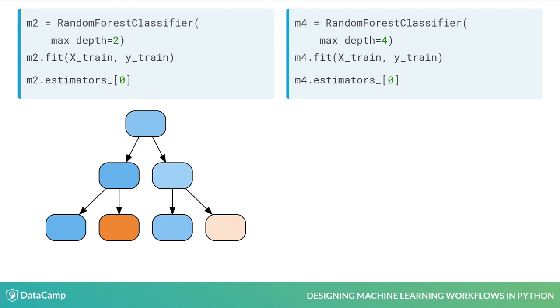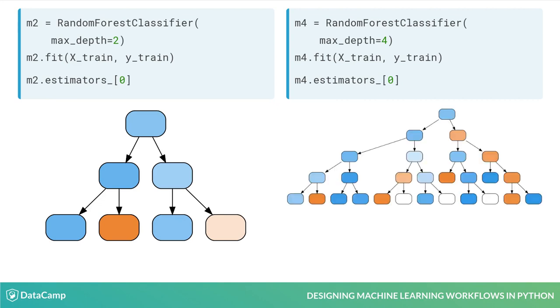Trees of depth 2 contain at most two nested decision rules, whereas depth 4 produces much deeper rules. Although these trees come from the same classifier family and data, they look very different.